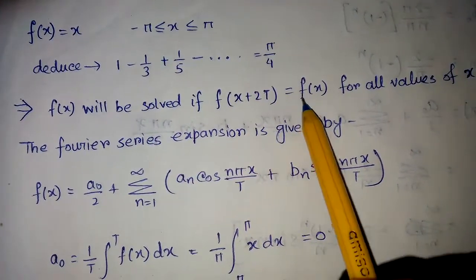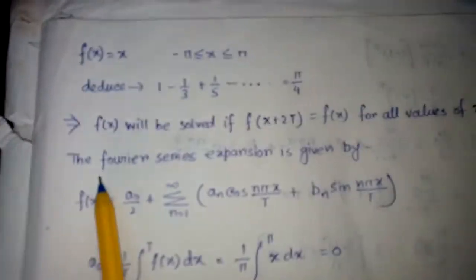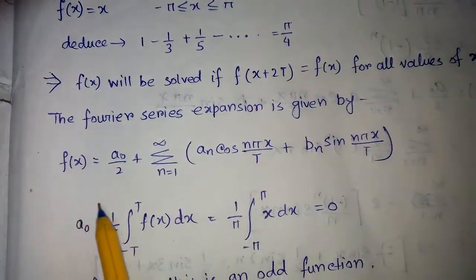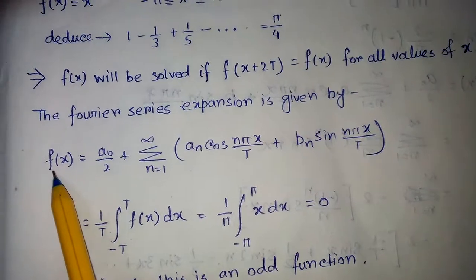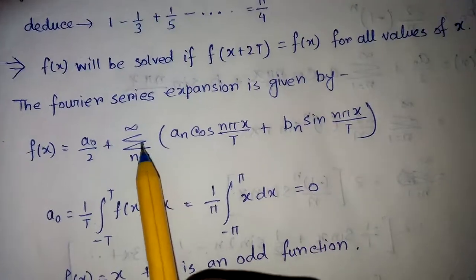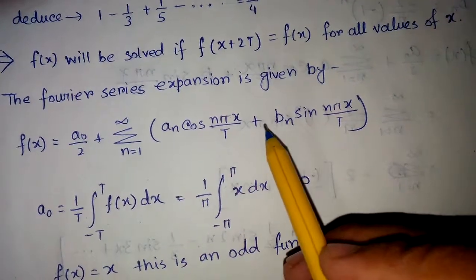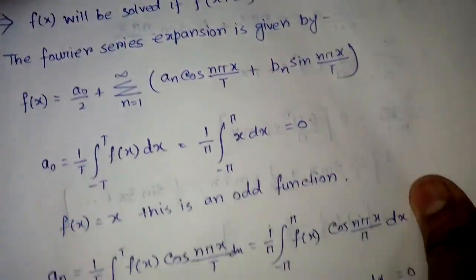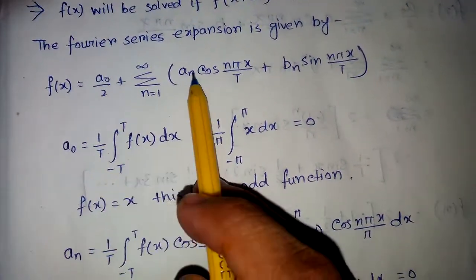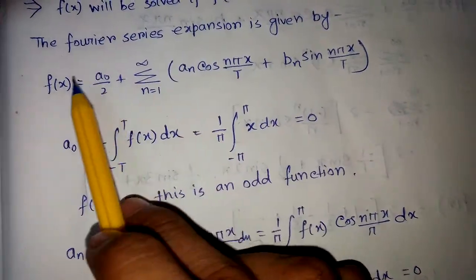If f(x + 2t) equals f(x) for all values of x, then the Fourier series expansion is given by the formula: f(x) equals a-naught by 2 plus summation from n equals 1 to infinity of a_n cos(n pi x / t) plus b_n sin(n pi x / t). Now we have to calculate a-naught, a_n, and b_n.